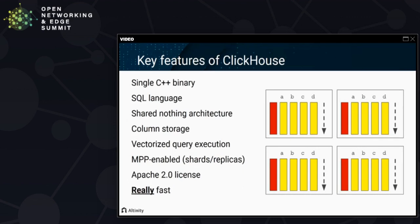From the analytic side of the house, we have features like SQL, which is very popular in analytic databases. We also have shared-nothing architecture — coupling of storage and compute similar to the traditional Vertica architecture. One of the most important things is we use column storage, so data is stored in arrays, which means we can iterate across them sequentially for both reading and writing. We use vectorized query execution to break those arrays into pieces and process them using SIMD instructions. And we have very good distributed query capabilities with built-in sharding and replication.